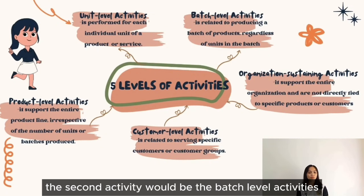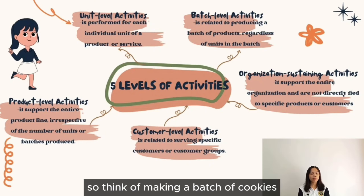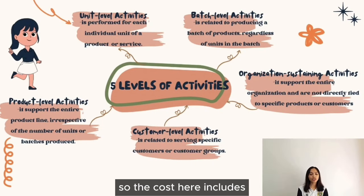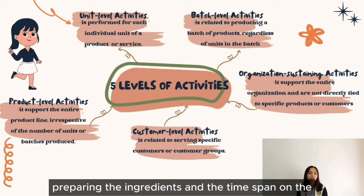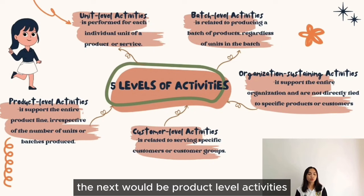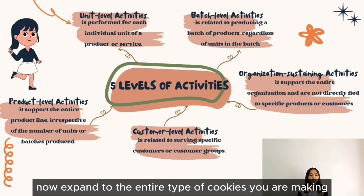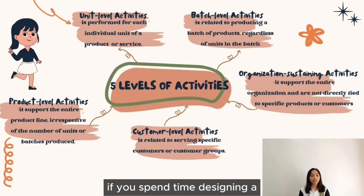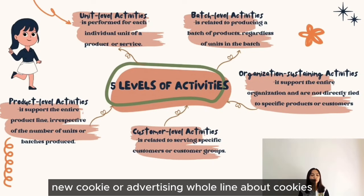The second activity level is batch-level activities. Think of making a batch of cookies — the costs here include setting up the kitchen, preparing the ingredients, and the time spent on the entire batch. The third is product-level activities — for example, if you spend time designing a new cookie or advertising a whole line of cookies, those costs are product-level activities.